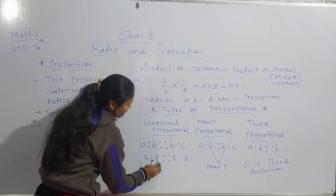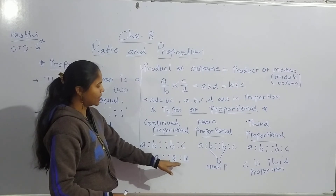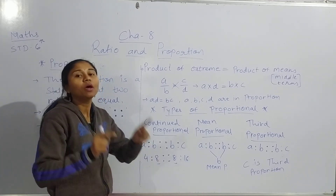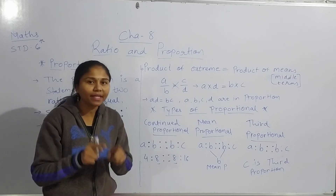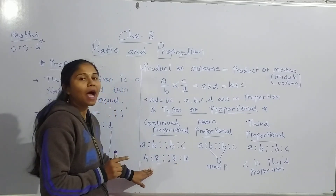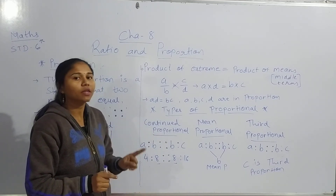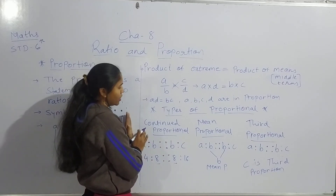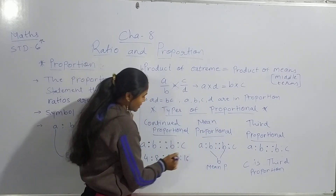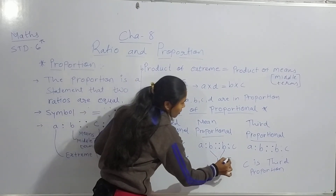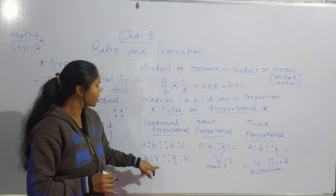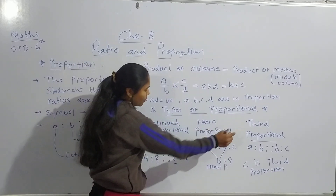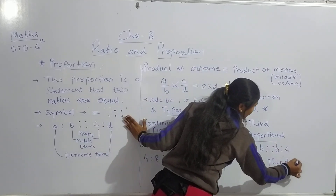Now, example 7. Look at this: 4 is to 8 and 8 is to 16. In this ratio, the middle terms — 8 and 8 — are equal, so we can say the given ratios are in continual proportion. The condition for continual proportion is that the middle terms must be the same. Using this, the mean proportional is 8 — the number that is the same. So b equals 8. And the third proportional is c, which means 16.